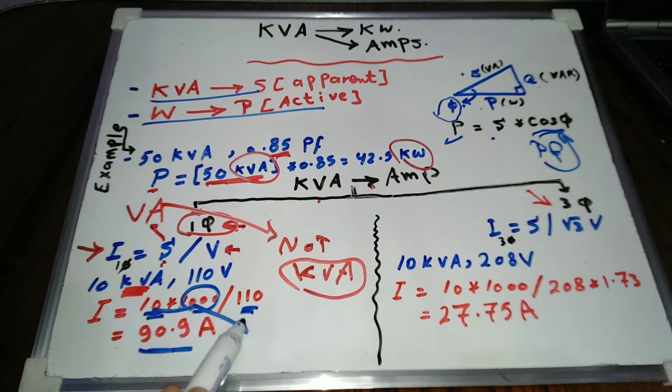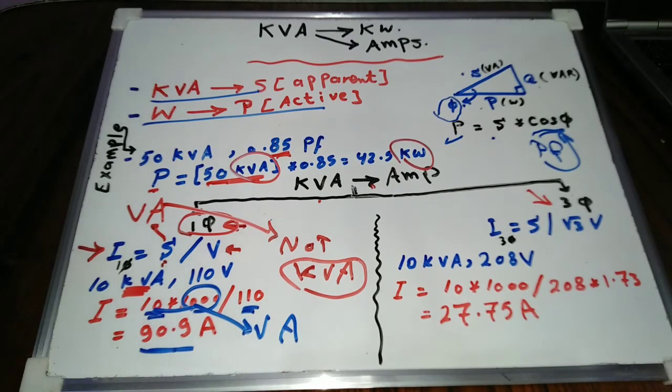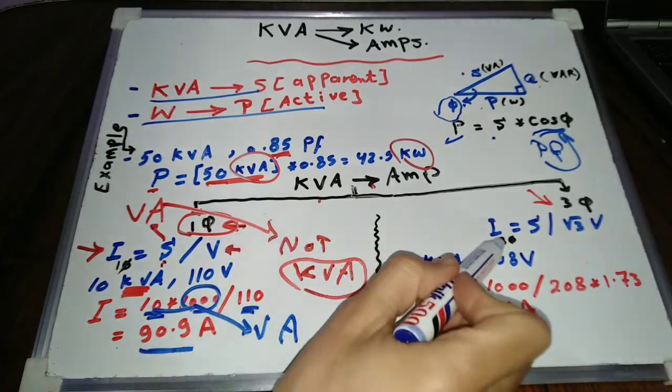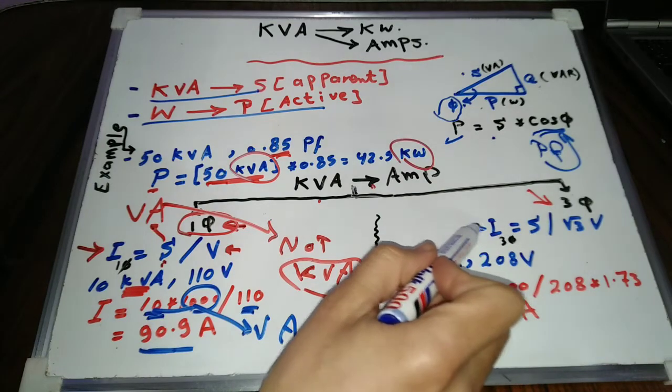Now let's convert kV ampere into amps in case of three phase loads. In case of three phase loads, the equation is: